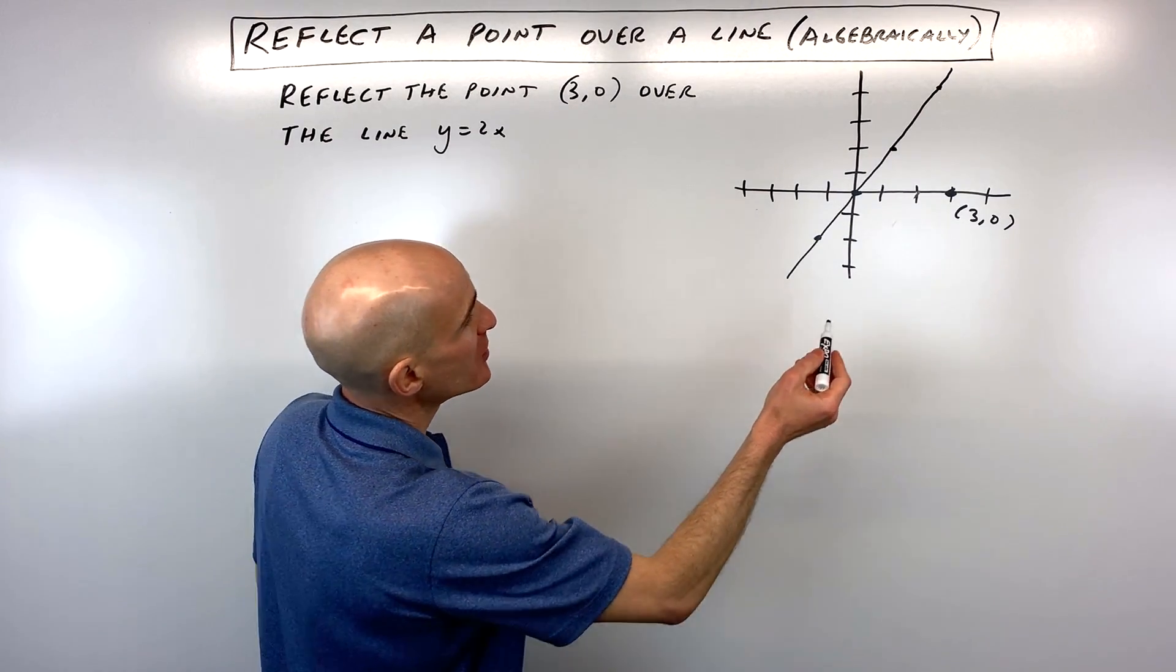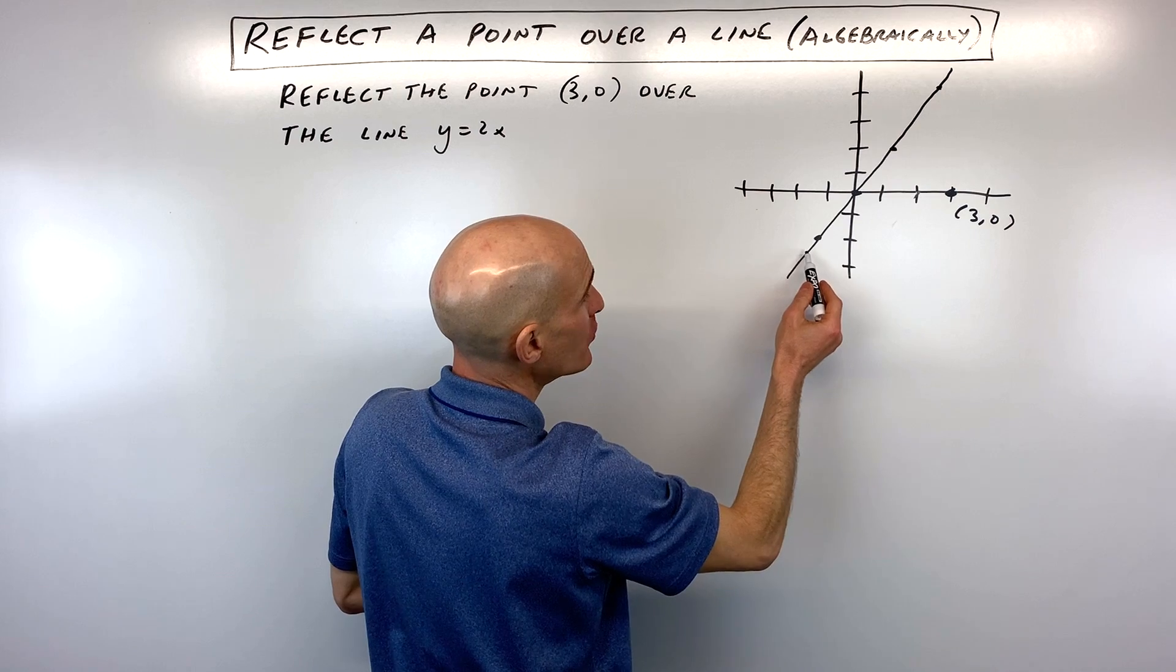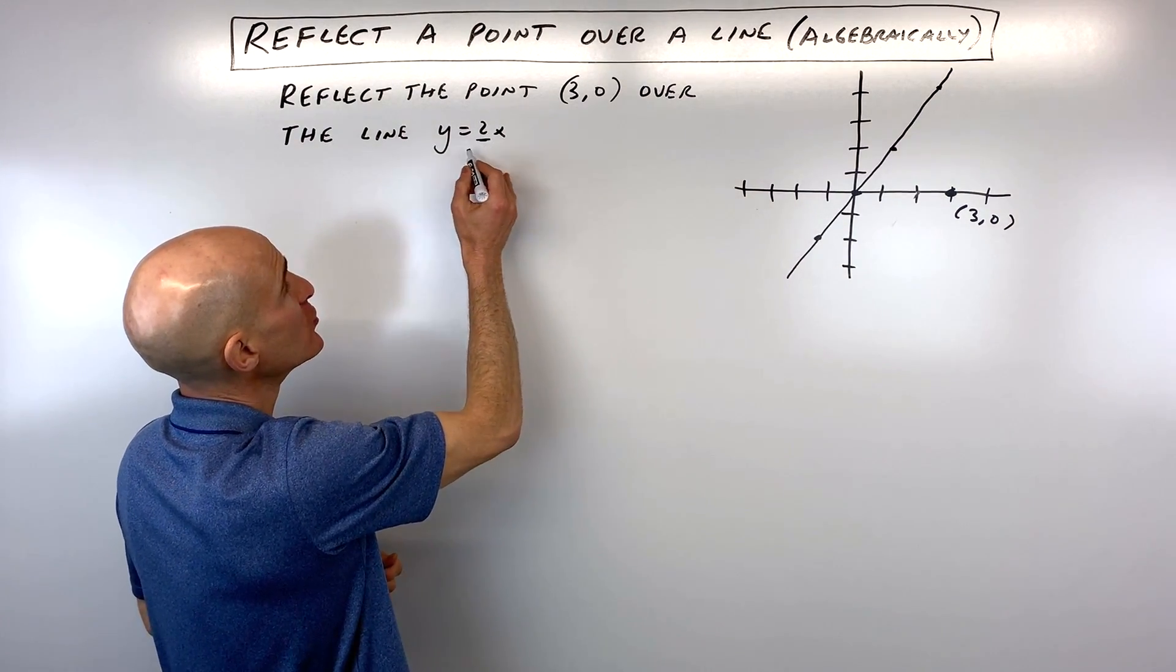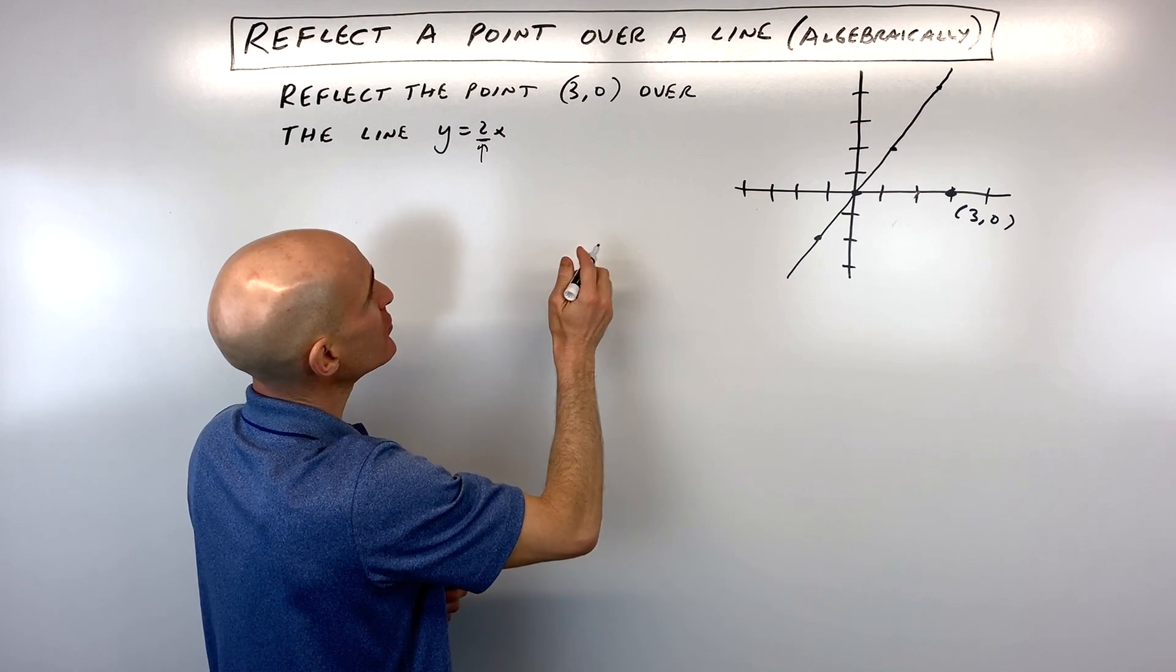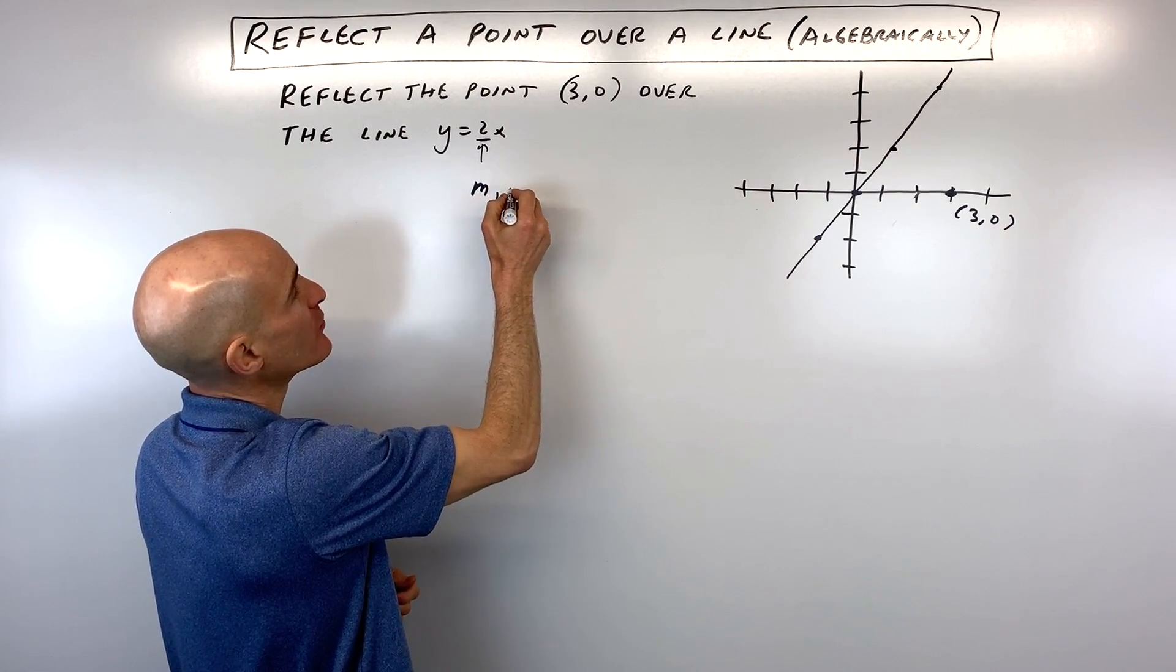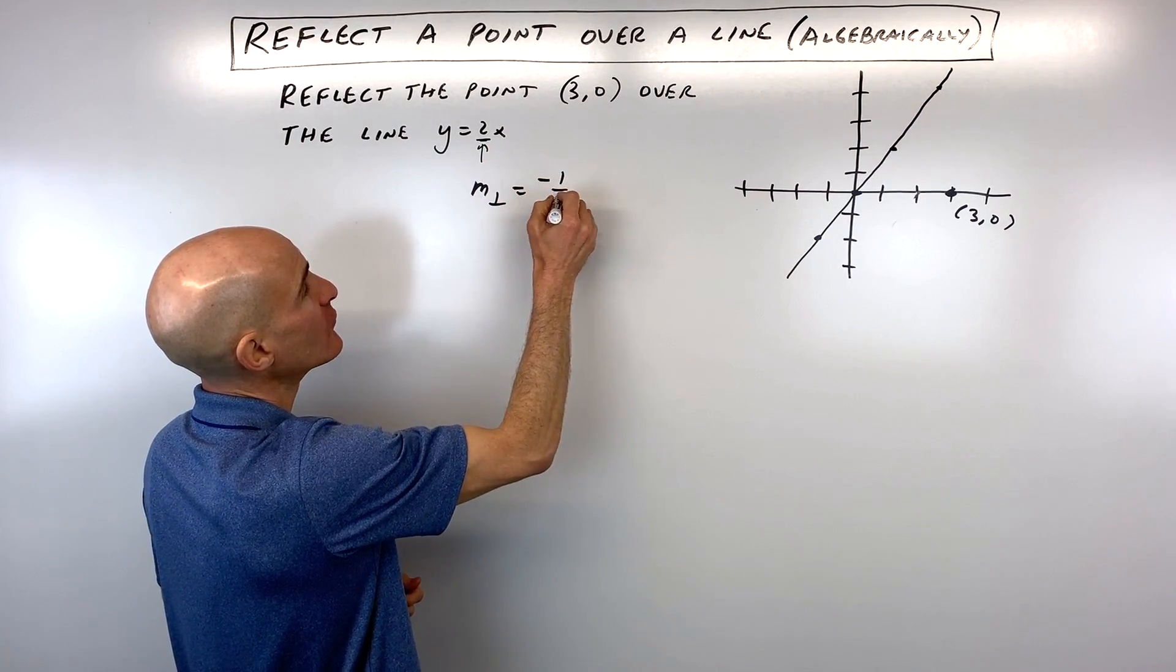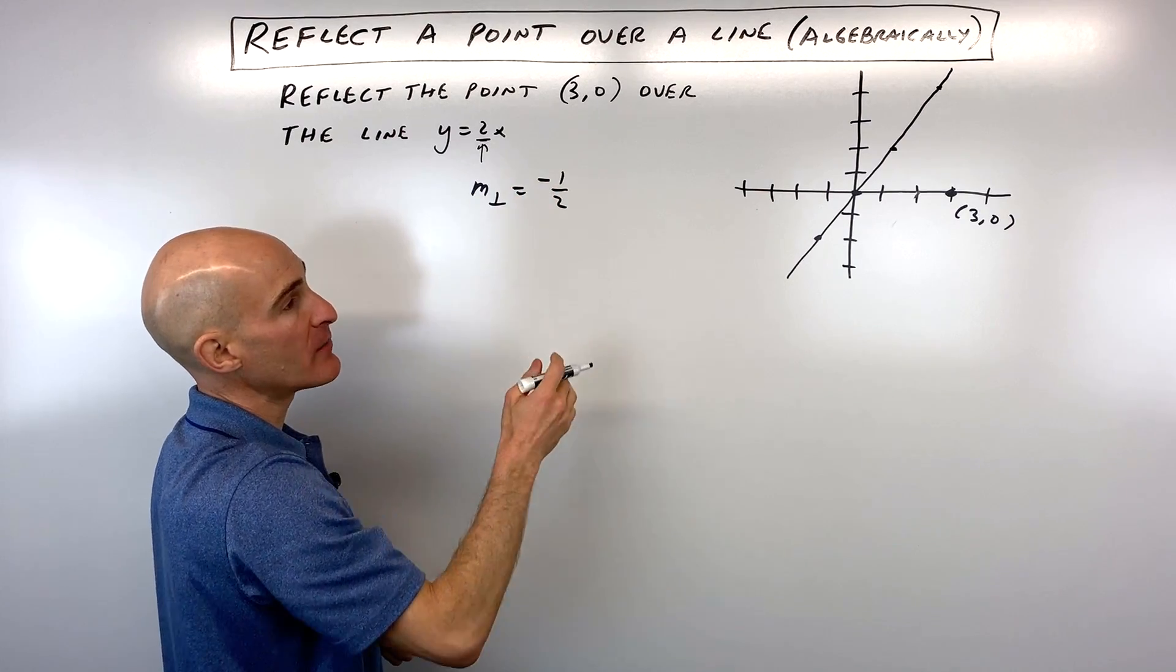The way we're going to do this is, first we're going to find out the slope of this line, which we know is 2. Y equals mx plus b, this is the slope. But the opposite reciprocal slope, the perpendicular slope, is going to be negative 1 half. So I just flipped the 2 over and made it the opposite sign.